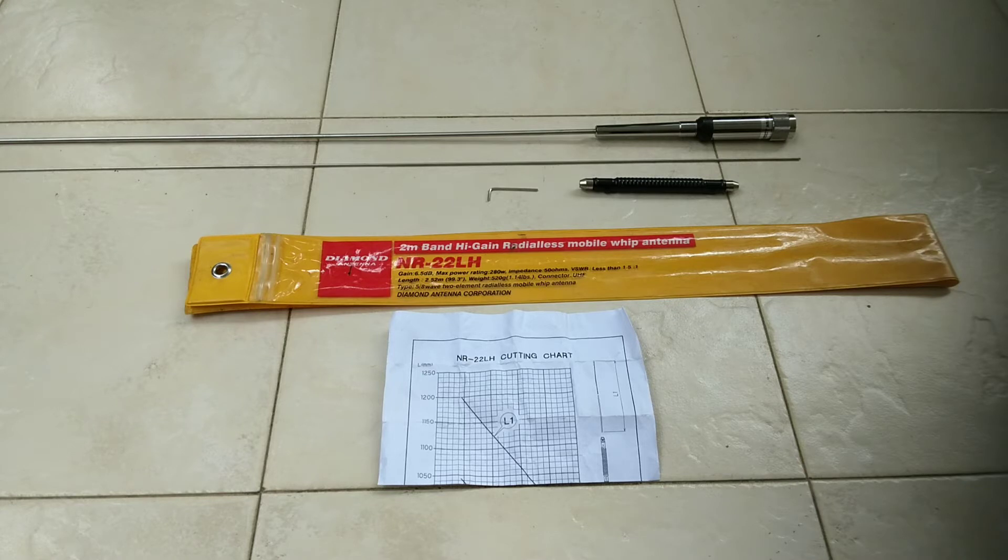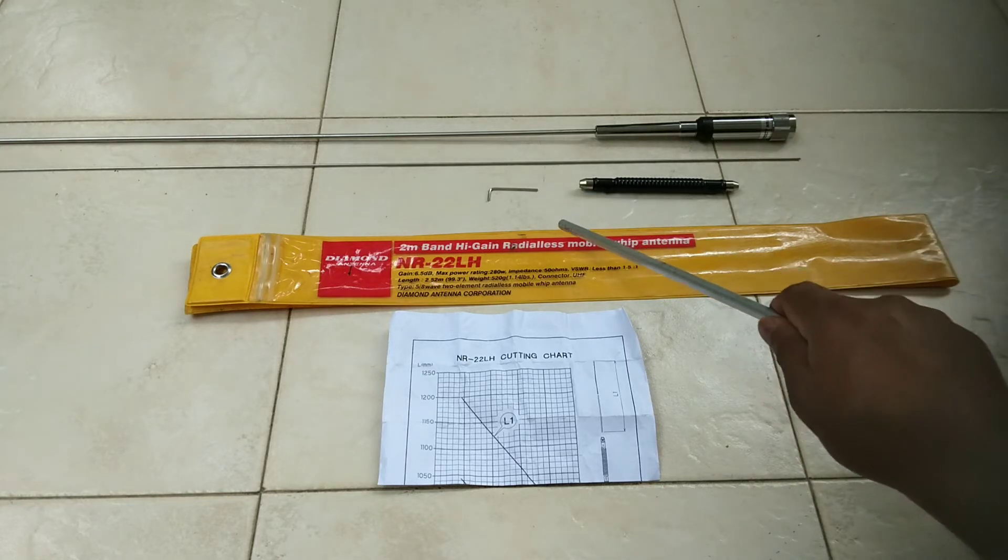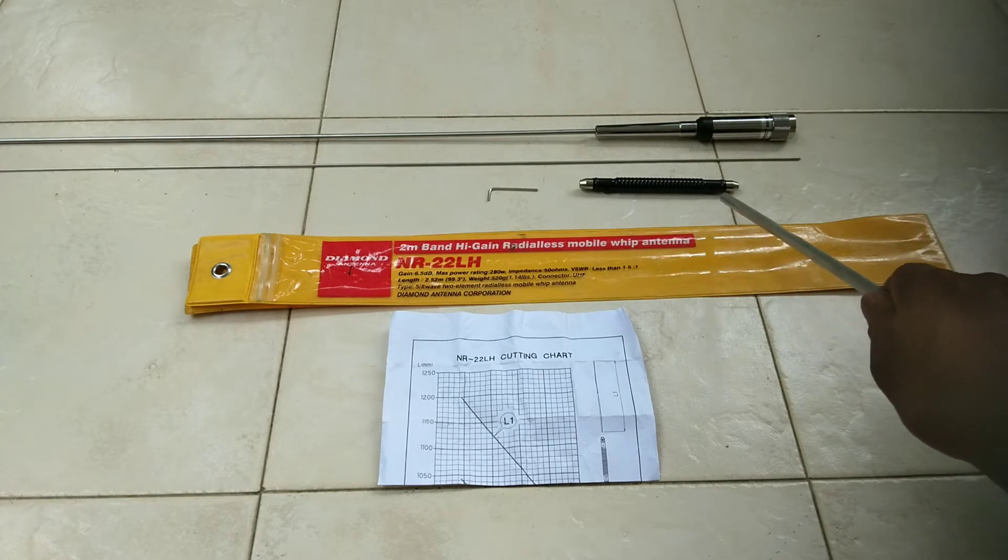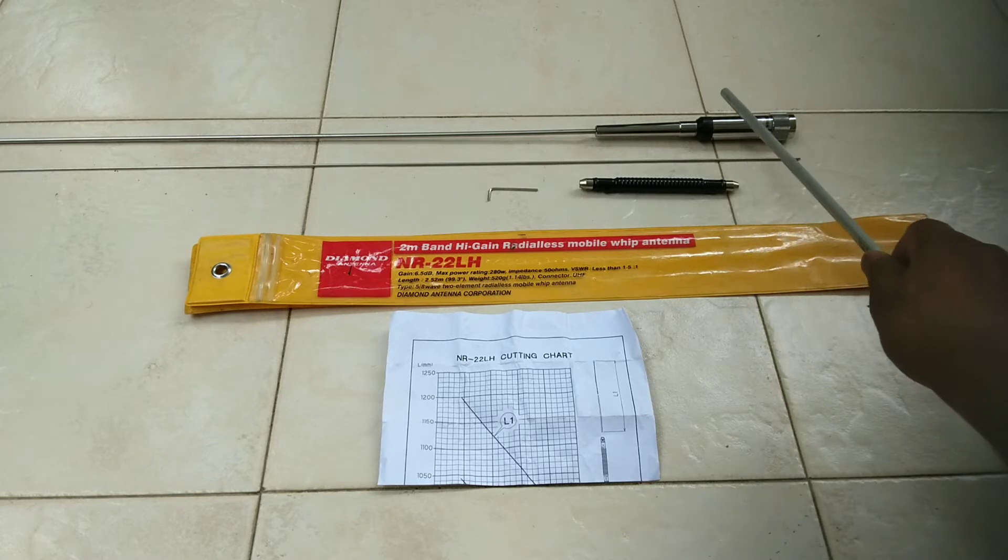This antenna comes with four parts: Allen key, phasing coil. This is the top part, it's called L1. This is the bottom part, it's called L2.